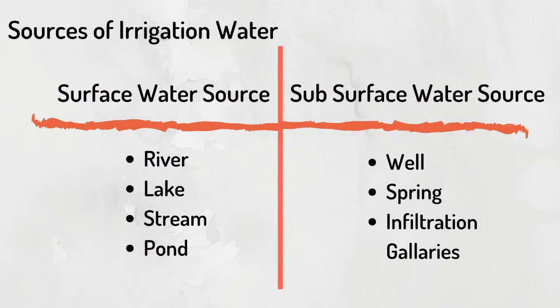Sources of irrigation water: Surface water sources include rivers, lakes, streams, and ponds. Subsurface water sources include wells, springs, and infiltration galleries.